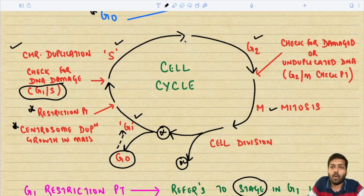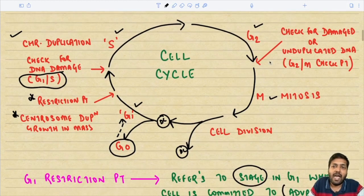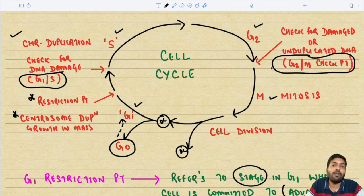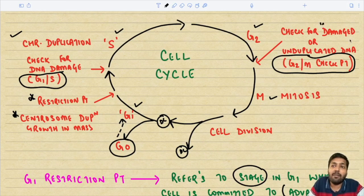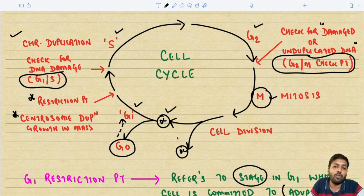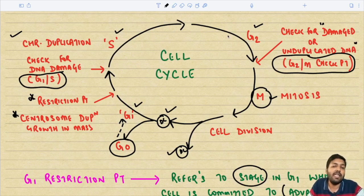After the G1/S phase comes the S phase, where chromosomal duplication occurs. Then comes the G2 phase and the G2/M checkpoint. At the G2/M checkpoint, the cell checks whether DNA replication happened properly and whether there is any damaged or unduplicated DNA. Once satisfied, the cell proceeds to mitosis followed by cell division into two daughter cells.